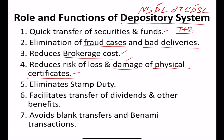The fifth function is elimination of stamp duty — there is no stamp duty now. The sixth function is facilitating transfer of dividends and other benefits. Not like before — 20 to 25 years ago, if a company declared a dividend, the amount was sent to you as a check, you had to go to the bank, deposit it, and then the dividend was credited to your account. But nowadays, if any company declares dividends, the dividend amount is directly credited to your bank account — no need to collect a check or manually deposit it.